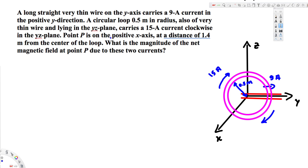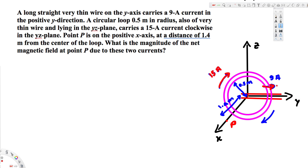We also have point P on the positive x-axis at a distance of 1.4 meters from the center of the loop. So this distance from the origin to point P is 1.4 meters. The question asks us to find the magnitude of the magnetic field at point P due to these two currents — the 15 ampere current through the loop and the 9 ampere current through the long wire.